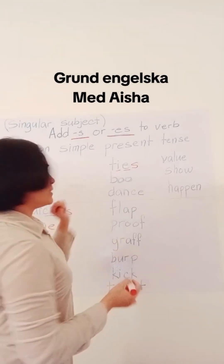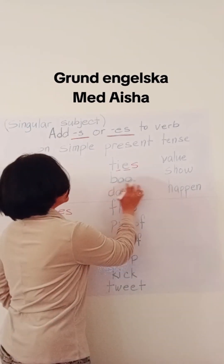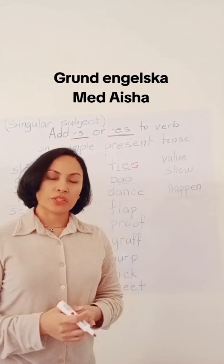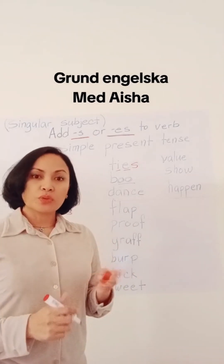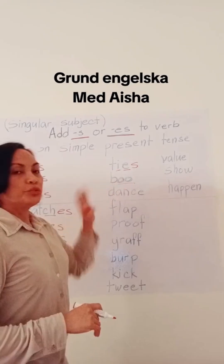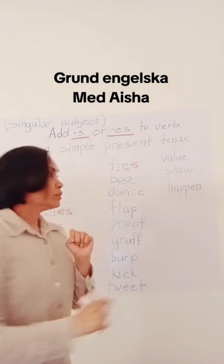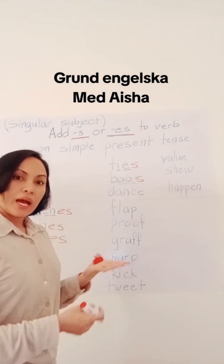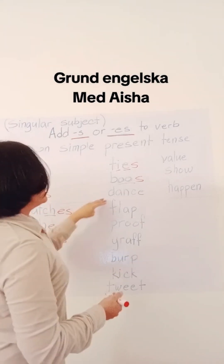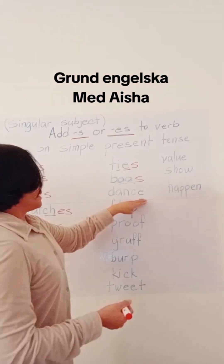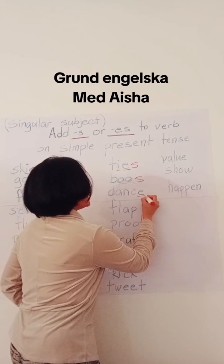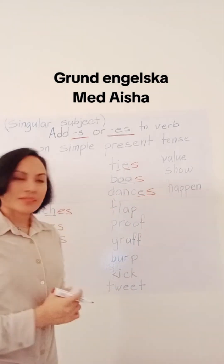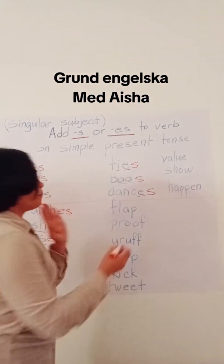Now we have boo — double o. She boos the concert, she boos the singer. If we have double o, we have to add es. As we had previously, dance becomes dances. If we have e, we just have to add es.